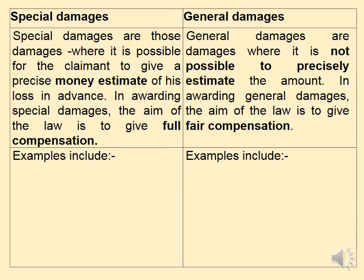General damages, on the other hand, are far more difficult to calculate because you can't put together an exact estimate, and the aim is to give fair compensation. General damages are tricky in two respects: they might take place in the future, such as future loss of earnings, or they may be for something that you don't have a precise monetary figure for — such as the actual injury itself.